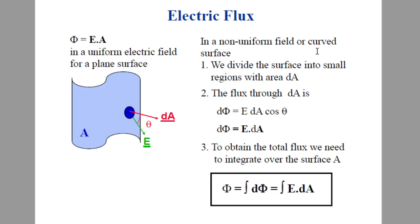For a non-uniform field or non-planar surface, we will divide the surface into small regions of area dA. We find the electric flux through each element: dφ = E · dA = E dA cosθ. To obtain the total flux, we integrate: φ = ∮ E · dA. This we have already discussed in the last class.